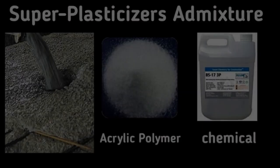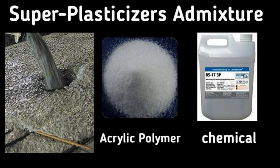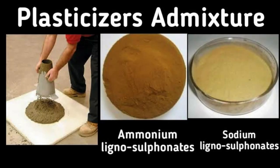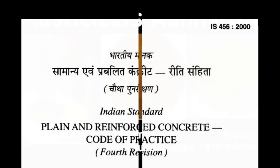Producers use admixtures primarily to reduce the cost of concrete construction, to modify the properties of hardened concrete, to ensure the quality of concrete during mixing, transporting, placing, and curing, and to overcome certain emergencies during concrete operations.